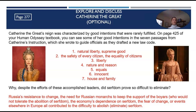On page 277 in your student guide, you'll find you can fill in these answers. Number one: natural liberty, supreme good. Number two: the safety of every citizen, the equality of citizens. Number three: liberty. Number four: nature and reason. Number five: equals. Number six: innocent. And number seven: house and family.